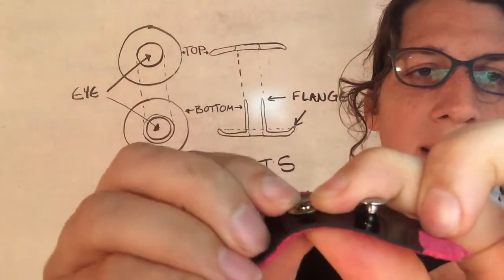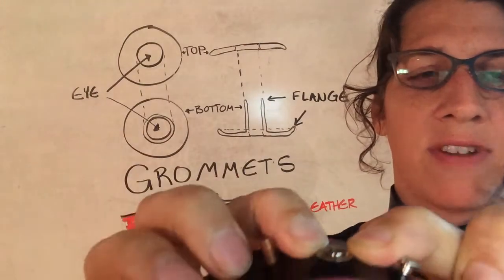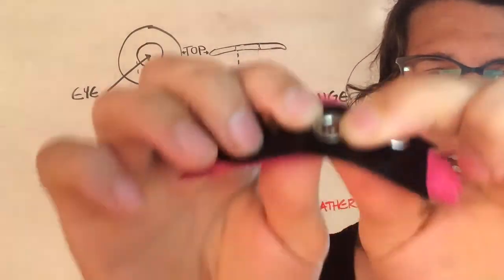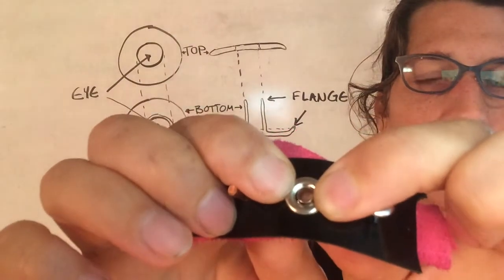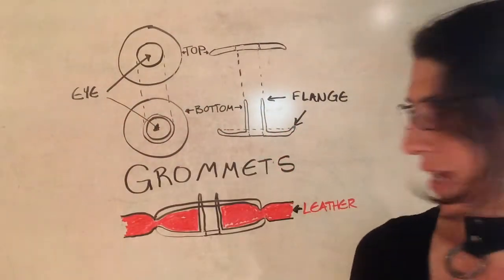And then this metal flange gets spread out so that it acts very much like a tube rivet to lock the top of the grommet in place. So what does that actually look like?